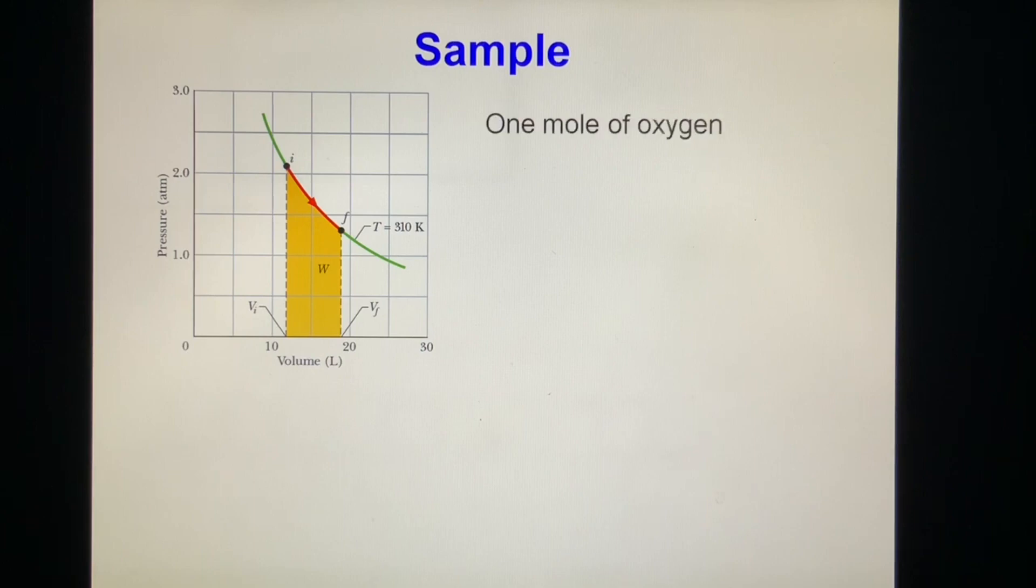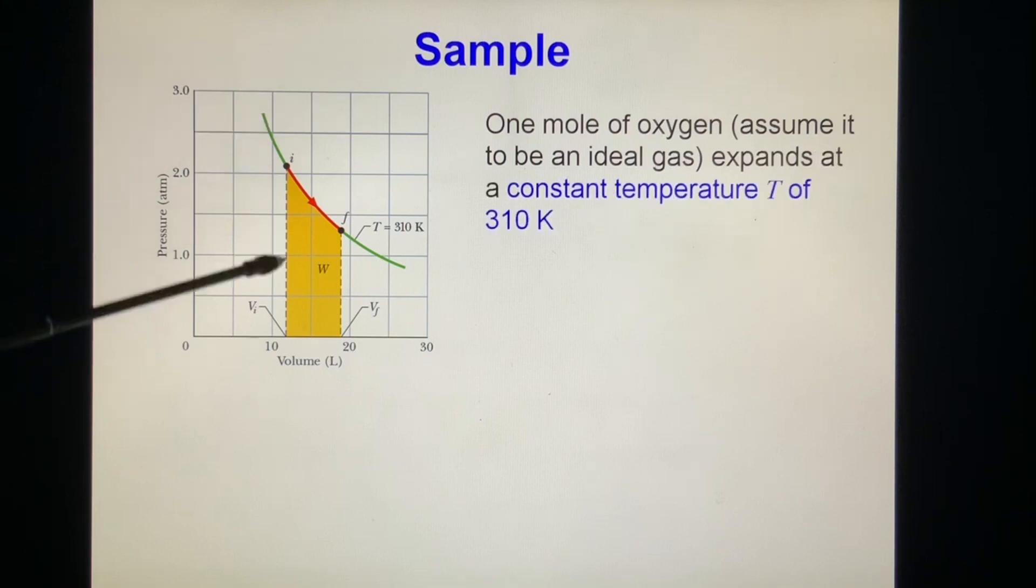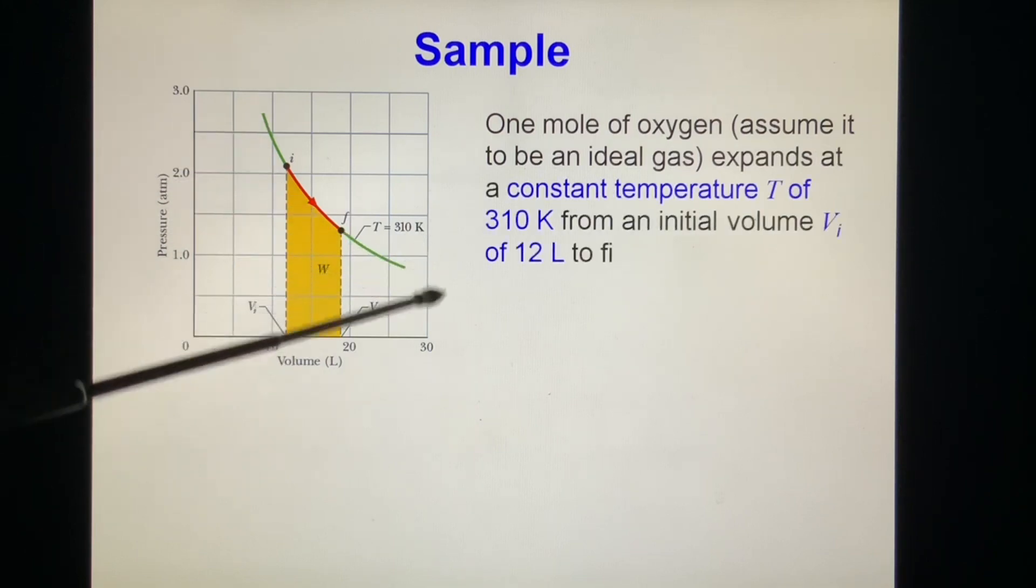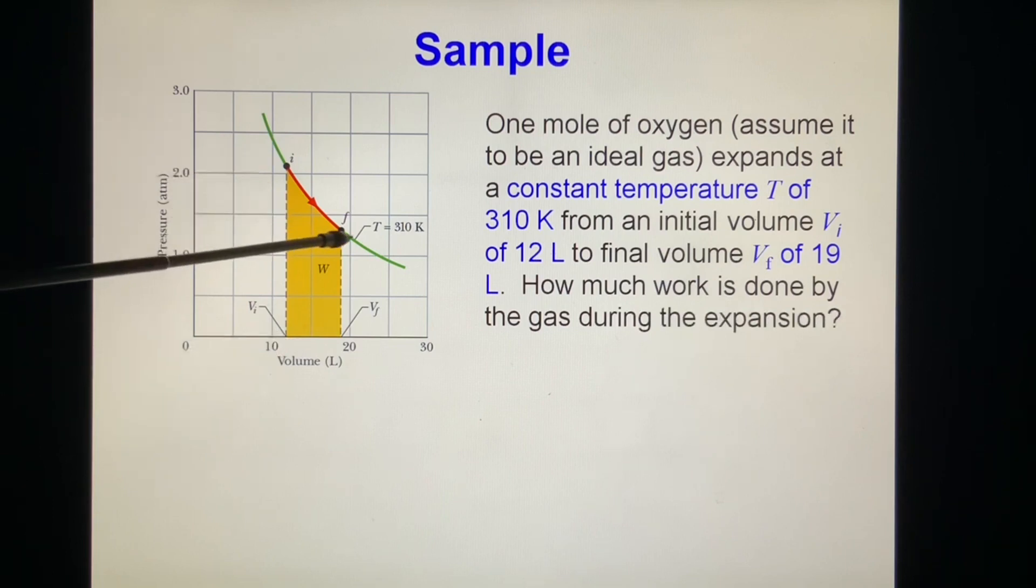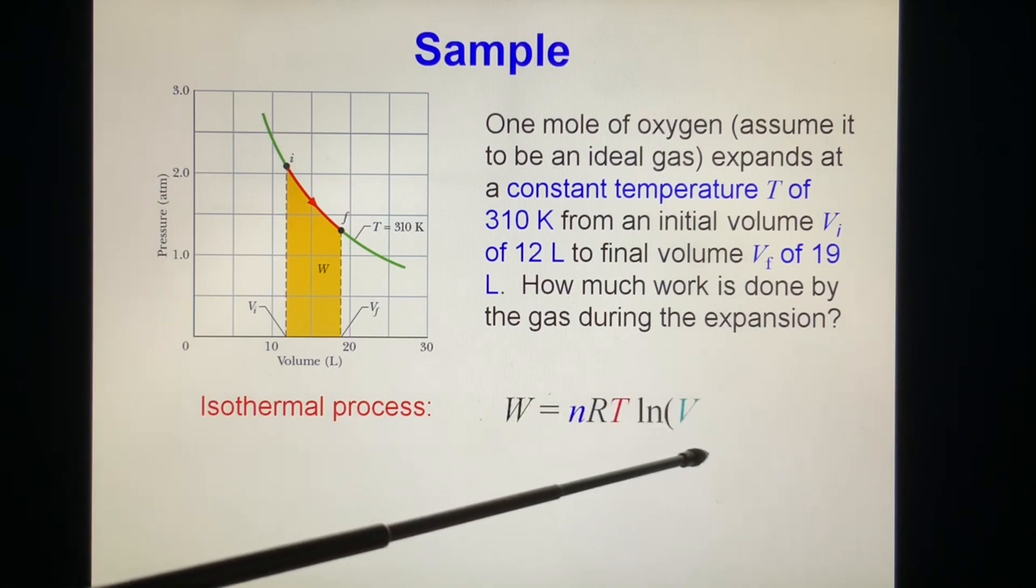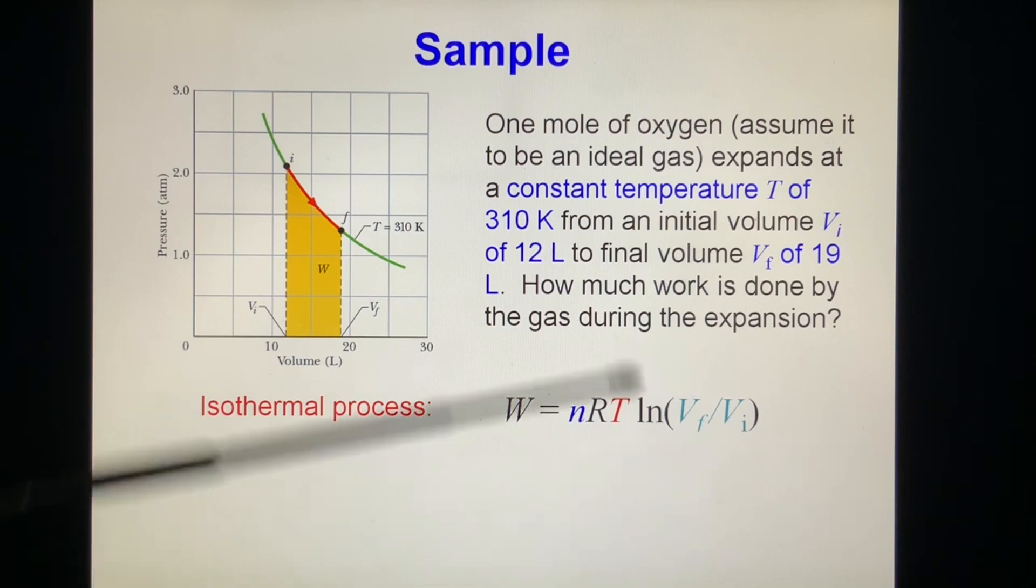Example: One mole of oxygen, assume it to be an ideal gas, expands at constant temperature 310 K from the initial state Vi 12 liters to final state V final 19 liters. How much work is done by the gas during the expansion? We know the work is the area under the curve. This is an isothermal process. So we know work done, we have the formula. Everything is available. It's very easy, we put the numbers inside, we get the answer.